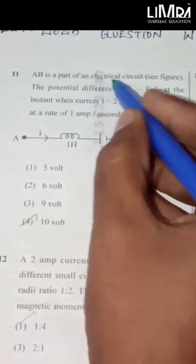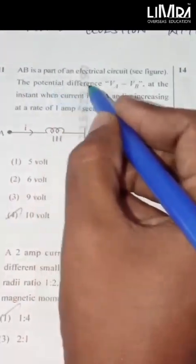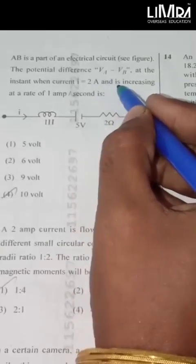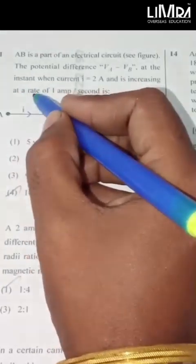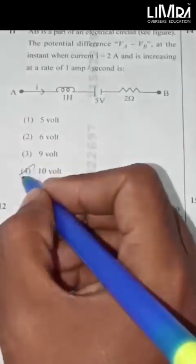AB is a part of an electrical circuit. See figure. The potential difference VA minus VB at the instant when current I is equal to 2A and is increasing at a rate of 1 amp per second is 10 volt.